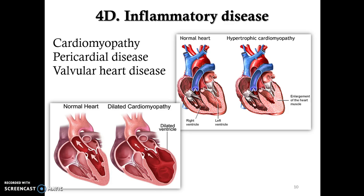The last type is inflammatory disease, which involves recruitment of white blood cells, redness, and swelling. The main types are cardiomyopathy — inflammation of the heart muscle itself; pericardial inflammatory disease — inflammation of the pericardium, which is the membrane that surrounds the heart; and valvular heart disease — inflammation of the valves that separate the atria and the ventricles. So three different types: inflammation of the heart muscle, the membrane surrounding the heart, and the valves within the heart.